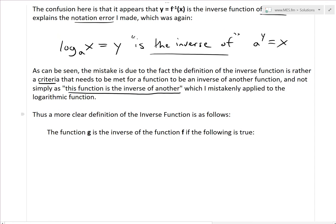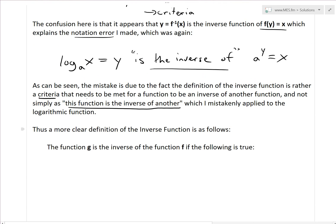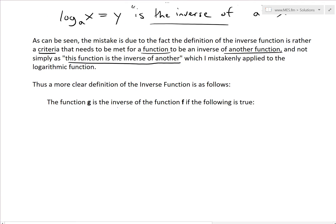So this is a criteria and not a statement saying this is the inverse of that. So now a more clear definition of the inverse function utilizes the fact that this is the criteria that needs to be met. The function g is the inverse of the function f if the following is true.